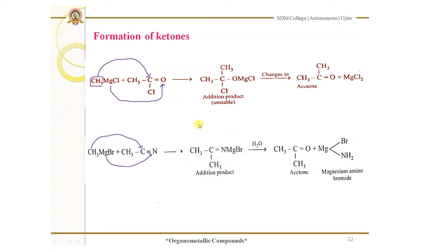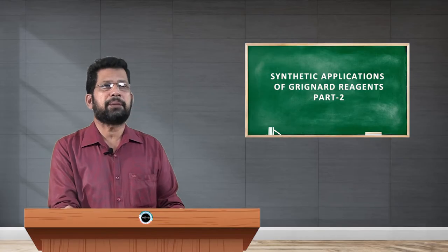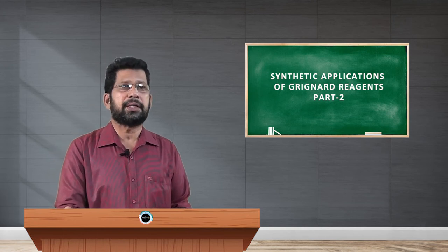Then the addition product is subjected to hydrolysis. When hydrolyzed, oxygen is incorporated and you get CH₃COCH₃. The nitrogen picks up H₂ to give NH₂, and the bromine remains, so the byproduct is magnesium aminobromide. The required compound formed is acetone. This is how we can prepare ketones starting from Grignard reagent.